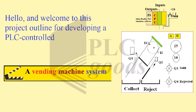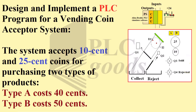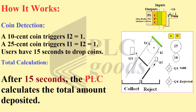Hello and welcome to this project outline for developing a PLC controlled vending machine system. The goal is to design and implement a PLC program for a vending coin acceptor system. The system accepts $0.10 and $0.25 coins for purchasing two types of products: Type A costs $0.40, and Type B costs $0.50.